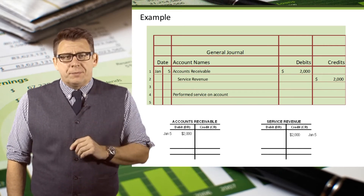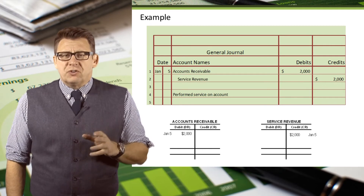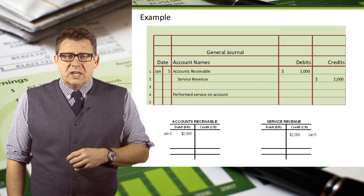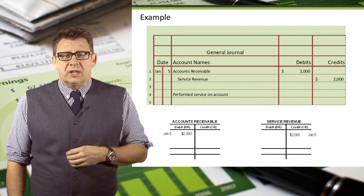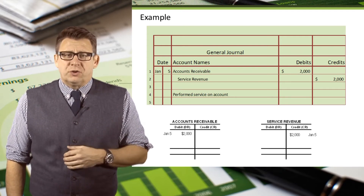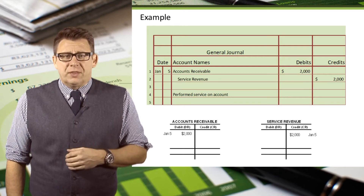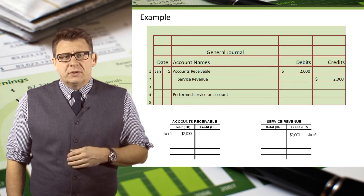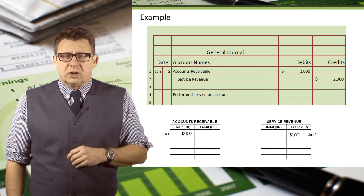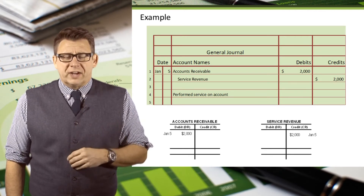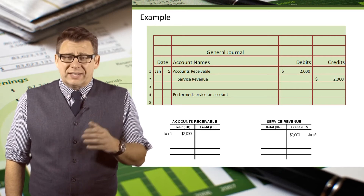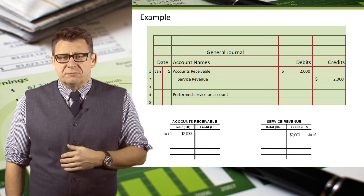The importance of this step is to make sure that all similar transactions are recorded in the same place. If you were an accountant for this company and you wanted to know how much service revenue your company had for a month, without this step you would have to go through every single journal entry in the general journal looking for those that affected revenue. That would be quite time consuming, even for the smallest of businesses.